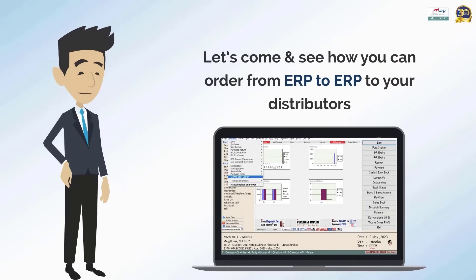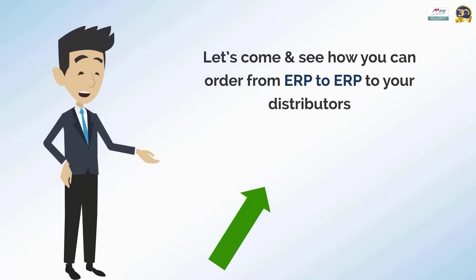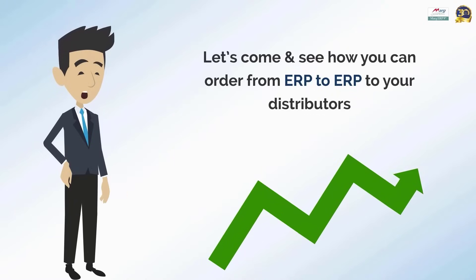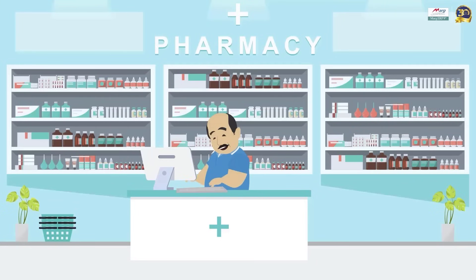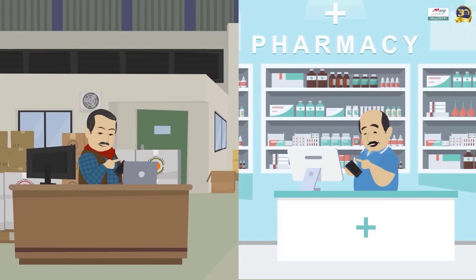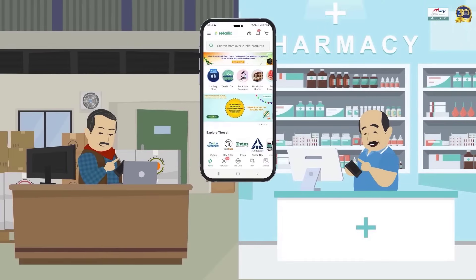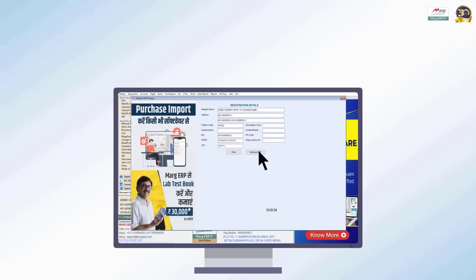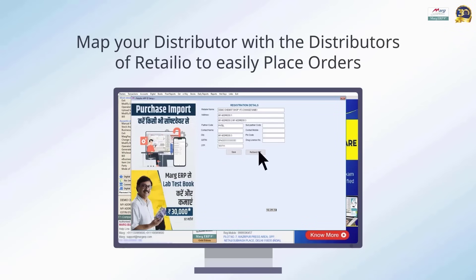Please note that in order to use this option, it is mandatory for you and your distributors to be active on Retail IO. After registration, you need to map your distributor with the distributors of Retail IO so that you can easily place orders with them.